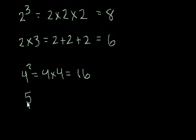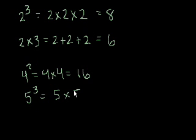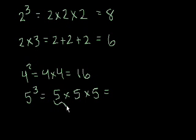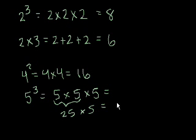5 to the third power — that would just be 5 times 5 times 5. Well, 5 times 5 is 25, times 5, and that equals 125.